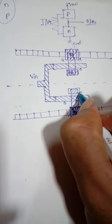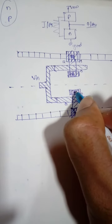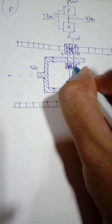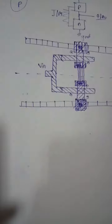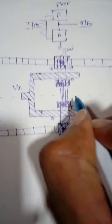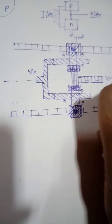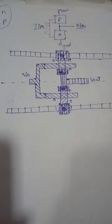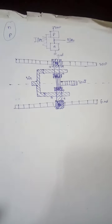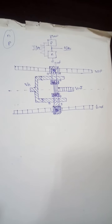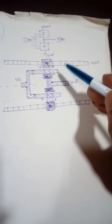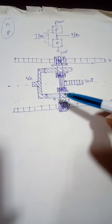Next, I'll draw a metal and P+ diffusion contact cut at the P transistor drain, and a metal and N+ diffusion contact cut at the N transistor drain. I then join them using a metal line and extend it to get the output VOUT. This is how you draw the layout diagram for the CMOS inverter — P logic above the demarcation line, N logic below, input given through the shared polysilicon, and output taken from the metal layer.